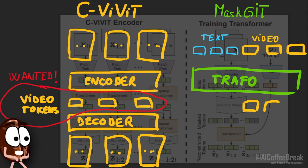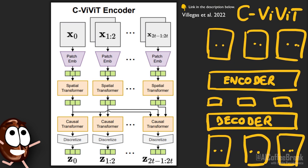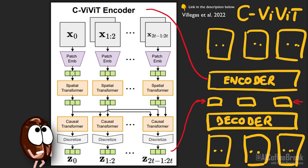How does CViViT work? The goal of this part of Fenaki is to reduce the dimensionality of the video data. It is an encoder-decoder model, trained on just video data with no text, to compress the video with the encoder into video embeddings and decompress it back to video again with the decoder.